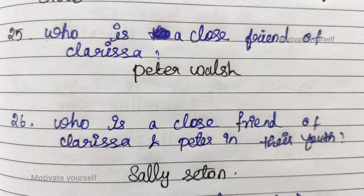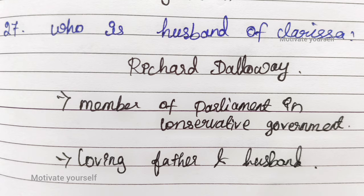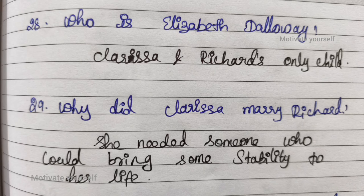Twenty-six: Who is a close friend of Clarissa and Peter in their youth? Sally Seton. Twenty-seven: Who is the husband of Clarissa? Richard Dalloway — Member of Parliament in the Conservative Government, loving father and husband. Twenty-eight: Who is Elizabeth Dalloway? Clarissa and Richard's only child. Twenty-nine: Why did Clarissa marry Richard? She needed someone who could bring some stability to her life.